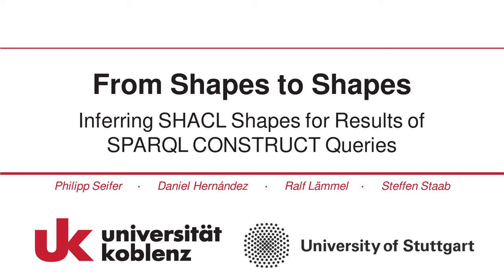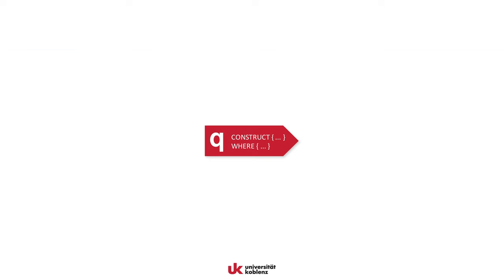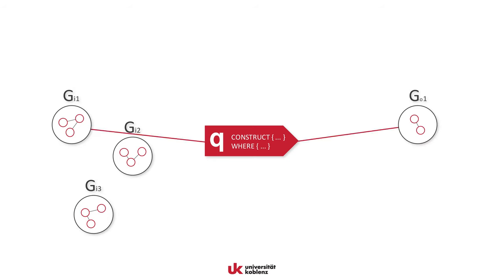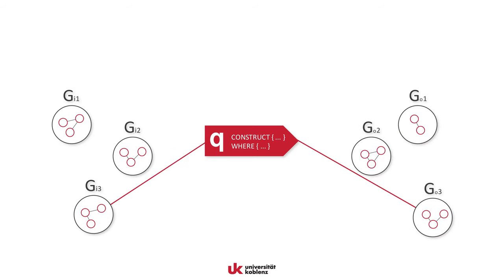In our paper, 'From Shapes to Shapes: Inferring SHACL Shapes for Results of SPARQL Construct Queries,' we tackle the problem of inferring a set of SHACL shapes that hold over all result graphs of a SPARQL Construct Query. A construct query Q may take one of many different graphs as input and produces a corresponding output graph as its result.